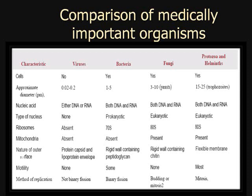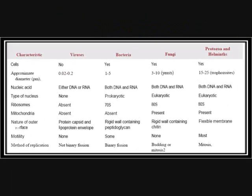For methods of replication: viruses do not replicate by binary fission. Bacteria replicate through binary fission. Fungi replicate by budding or mitosis. Helminths and protozoa replicate primarily by mitosis. Additionally, humans and animals fall into the eukaryotic sphere, so we are relatives, in a sense, of fungi and protozoa and helminths — we actually evolved from those organisms.